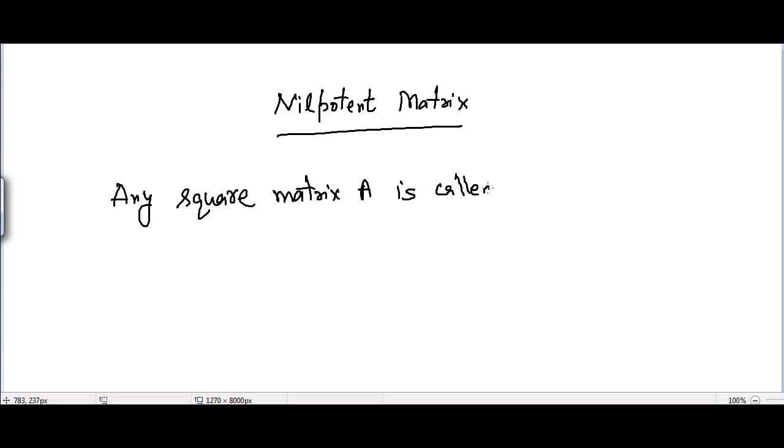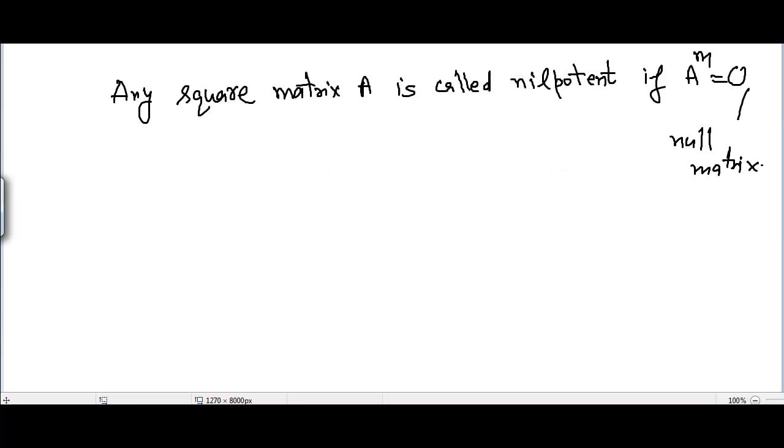This video is regarding nilpotent matrix. Any square matrix A is called nilpotent if A^m = 0, where 0 is a null matrix. We can take an example of such a matrix.